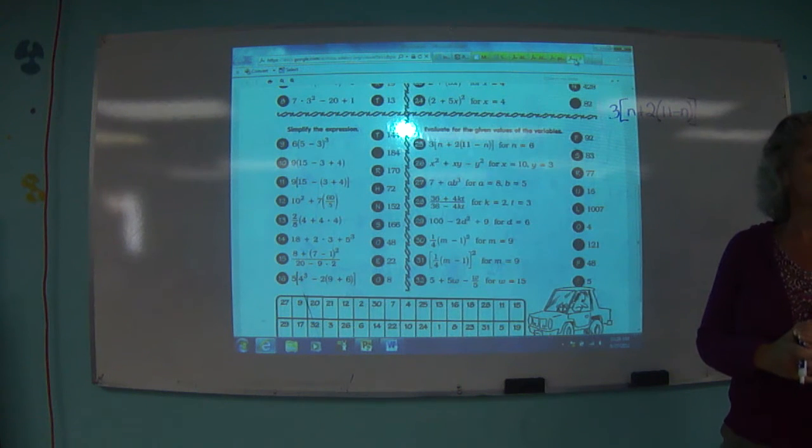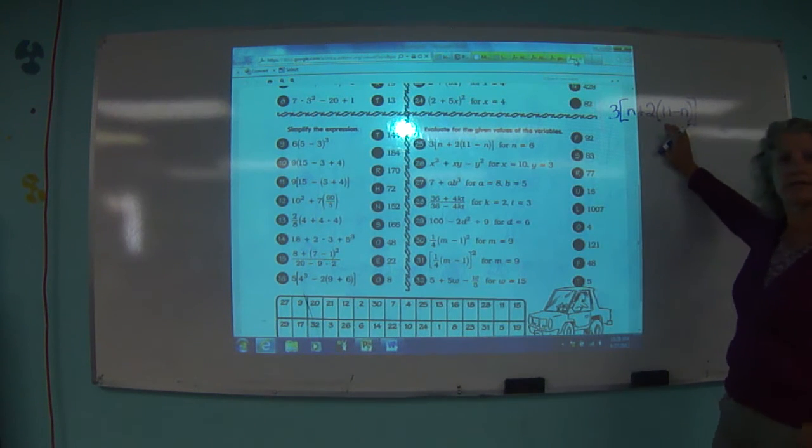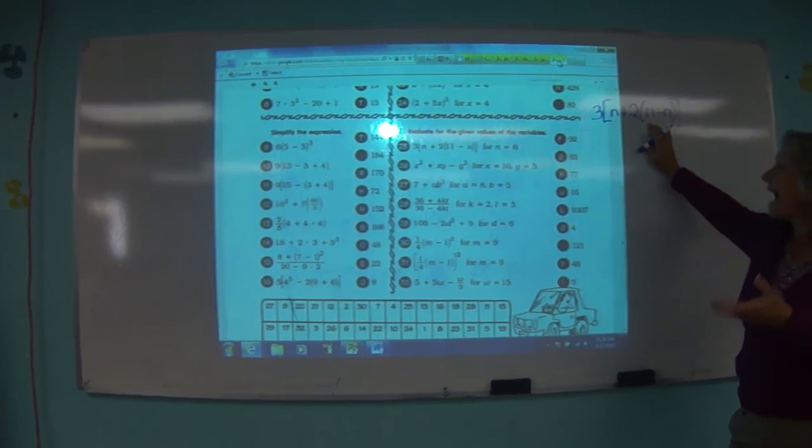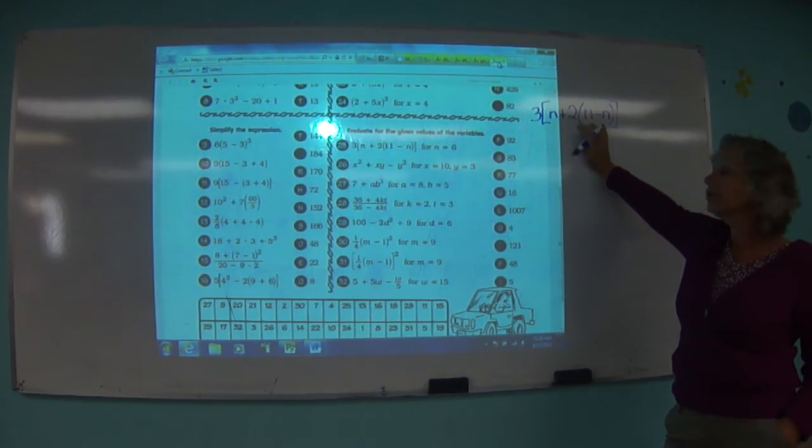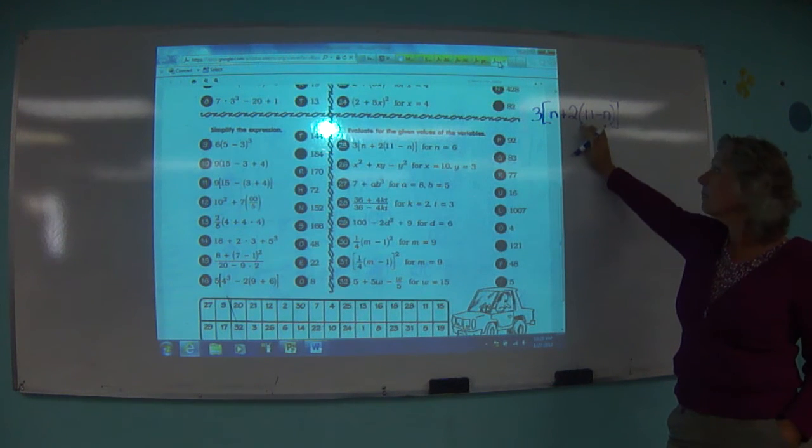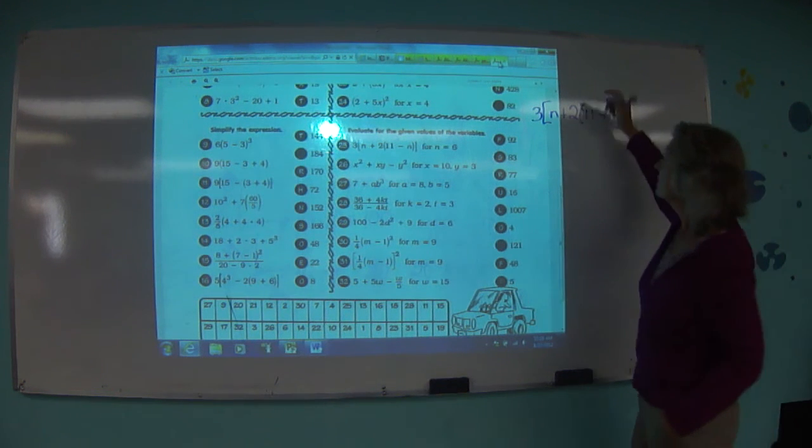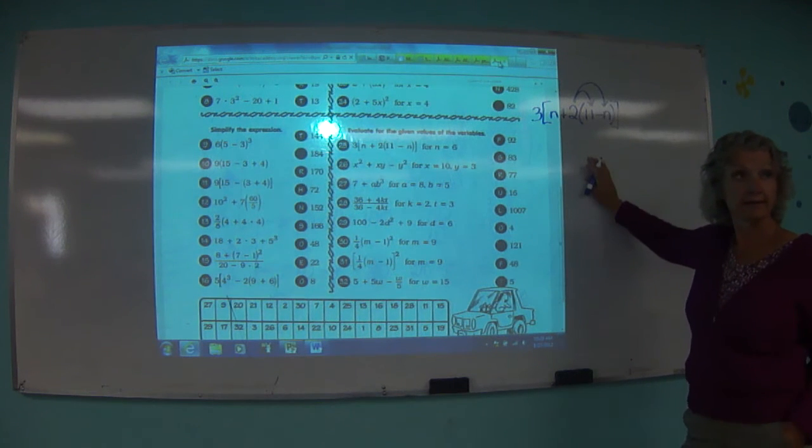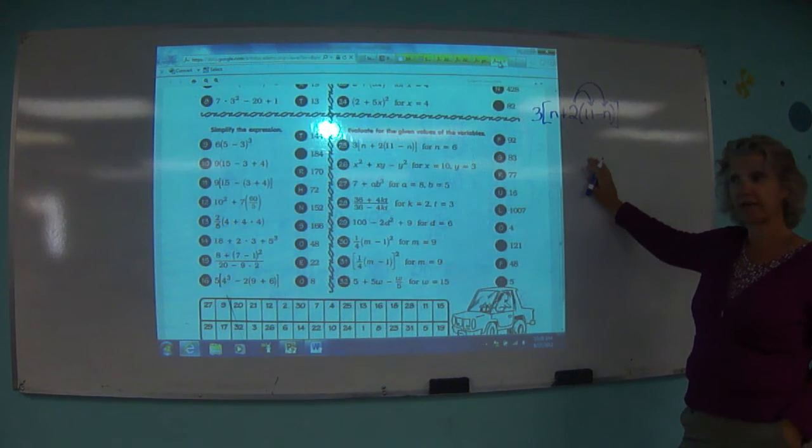So where do you start? Yes. Inside the parentheses, can you combine 11 and n? No, because one's yellow and one's green, right? So how do you deal with that 2 and the 11 and 2 and the n? What property are you going to use? Does this look familiar? Yes. What property does that represent? It's the distributive property and you've just earned yourself a word.